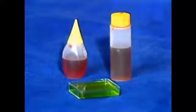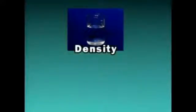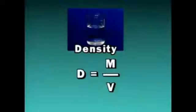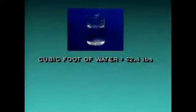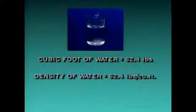With liquids, two other properties you need to be familiar with are specific gravity and density. Liquids don't have definite shapes, but they do have definite volumes. Knowing the volume of a liquid can help you figure out its density. Specifically, the density of a liquid is its mass divided by its volume. Mass is normally expressed in terms of weight. For example, a cubic foot of water weighs about 62.4 pounds, so the density of water is 62.4 pounds per cubic foot.